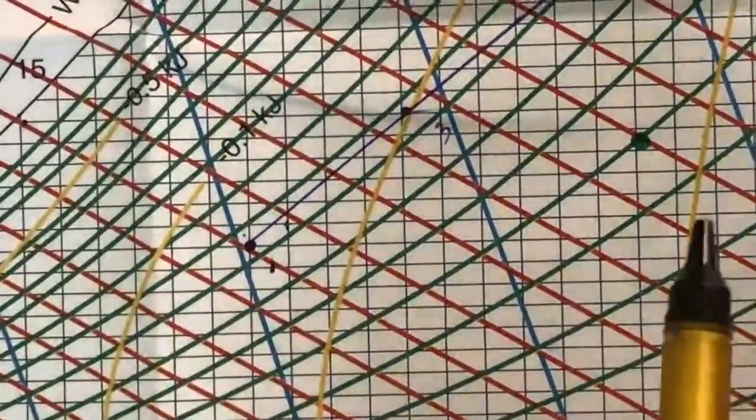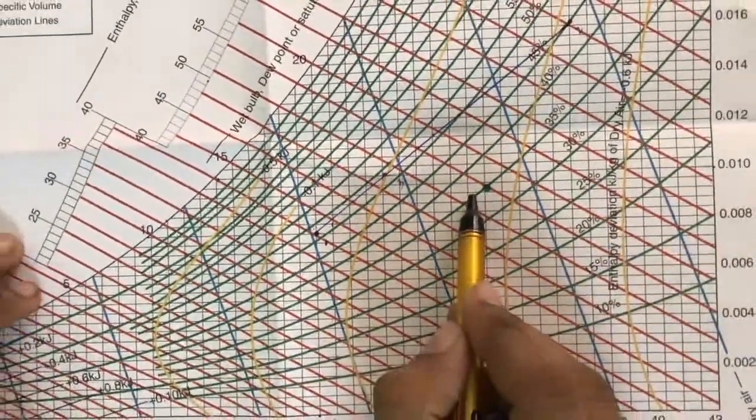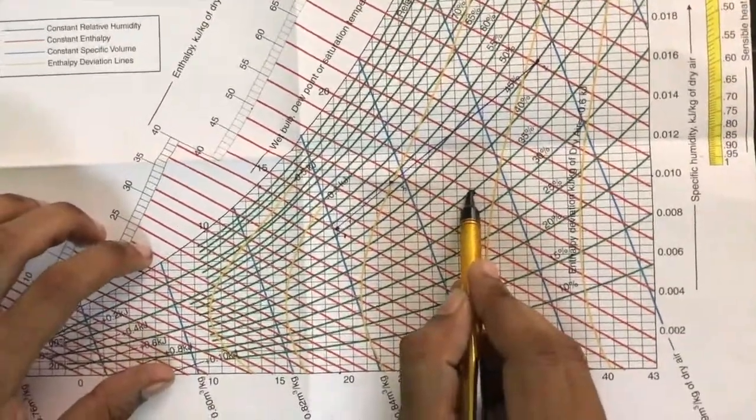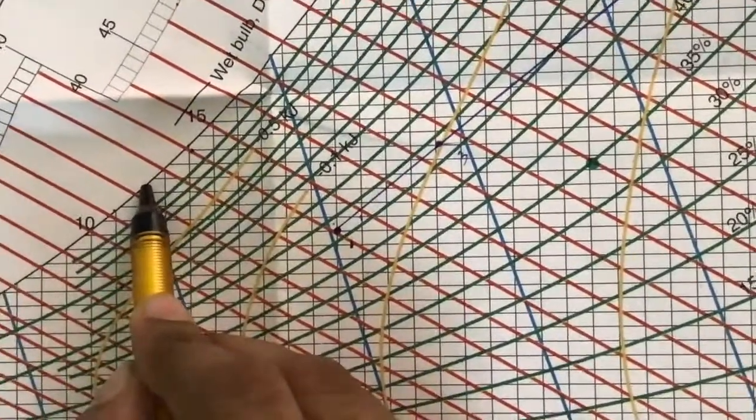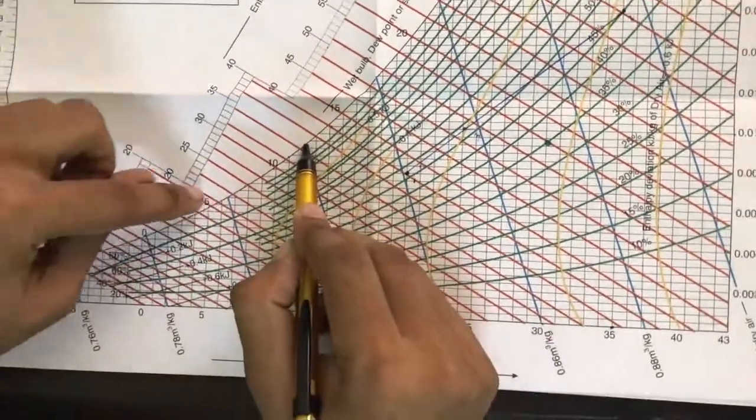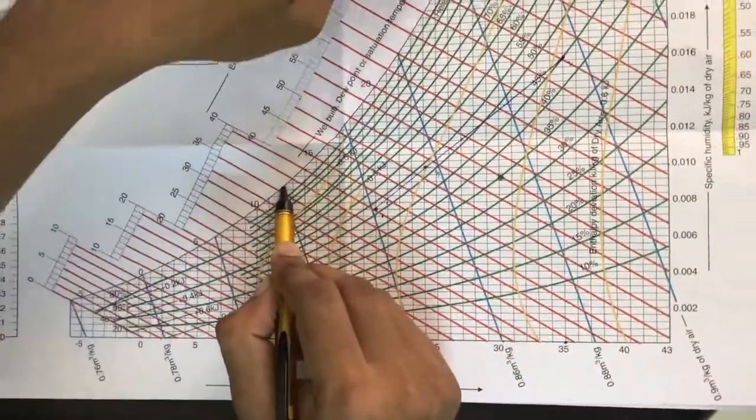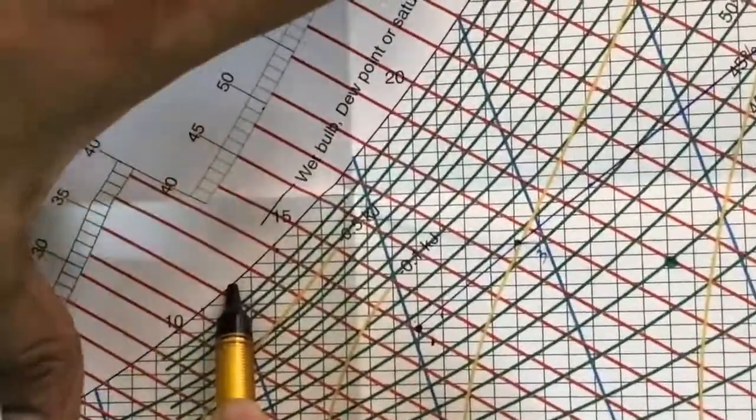First, if we are asked to find the dew point temperature, draw a horizontal and it will be meeting here. This line - minus 5, 0, 5, 10, 15, 20, 25 - these are all actually the temperature range.